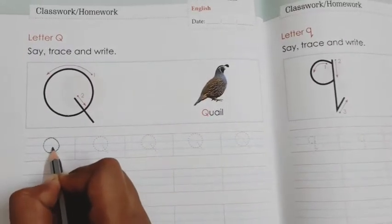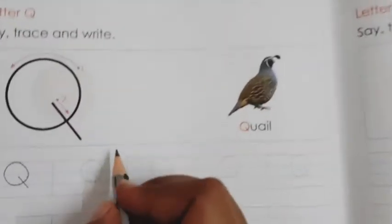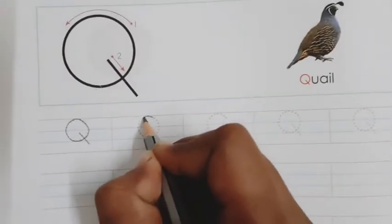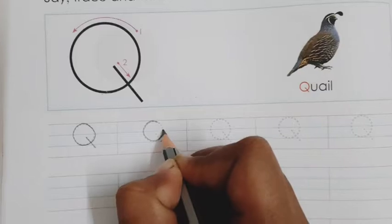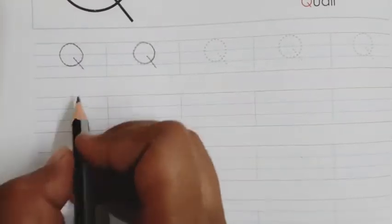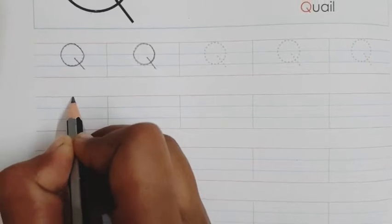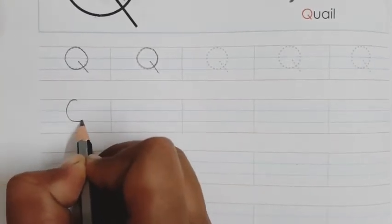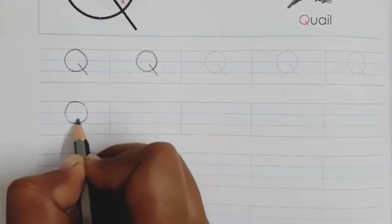Okay, then one slant line. It's capital letter Q. Which letter is this? It's capital letter Q. Now here also you have to write without dots. Keep a pencil on red line, come to the third line that is blue one, then again go up to the red line, make one slant line like this.